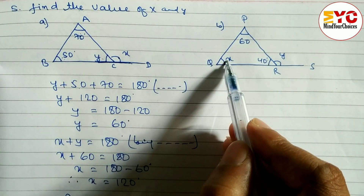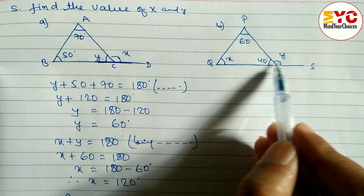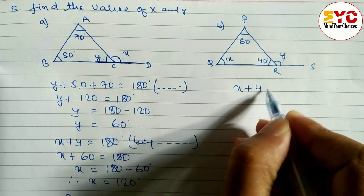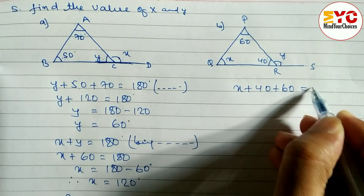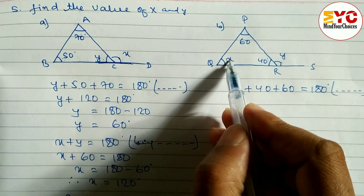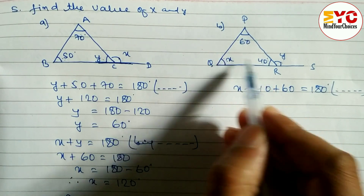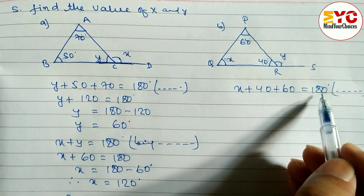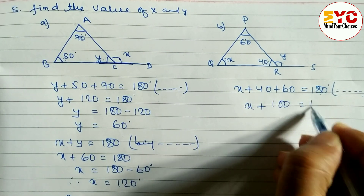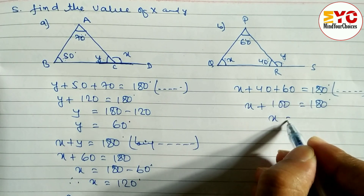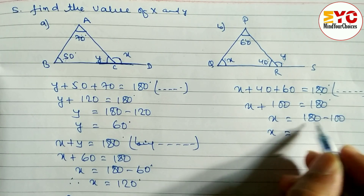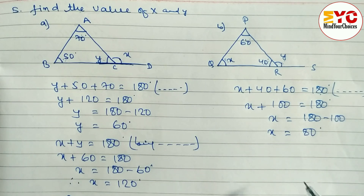Now look at the next question. This is also the same: when you add these three angles we get the value of X, then y plus 40 is equal to 180 and we get the value of y. Let's add: X plus 40 plus 60 is equal to 180 degrees — reason: sum of angles of the triangle. X plus 100 is equal to 180 degrees, so X is equal to 180 minus 100, and X is equal to 80 degrees.